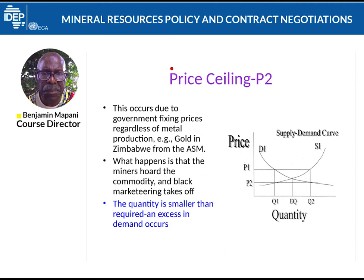The opposite of price floors is the price ceiling — the highest price we can go. The price ceiling can happen when government fixes the price of bread, or the price of gold. For example, in Zimbabwe the government fixes the price of gold, meaning everyone must sell to the government at that price. What happens is that producers will stop selling to the government and start finding black markets, especially if the government price is lower than the market price. Price ceilings always happen when the quantity available is smaller than the required amount.